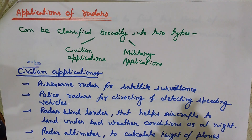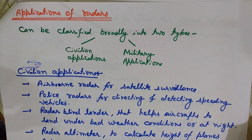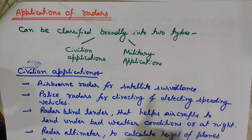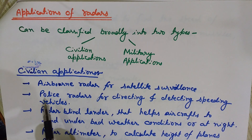Police radars can be used for detecting speeding vehicles. Since radars can detect static and moving objects and measure velocity and angle, we can detect at what speed a vehicle is moving. This makes radar very useful for traffic police.